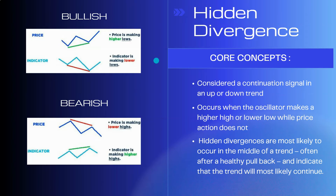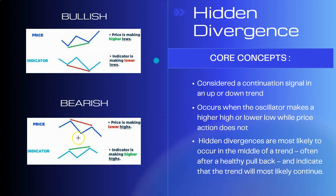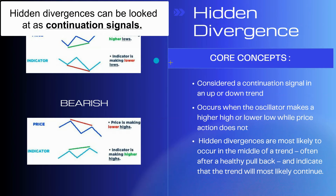On the bearish side of hidden divergence, the opposite occurs. This takes place during a downtrend where the indicator is making higher highs while price action is making lower highs. This tells us that the selling has not waned and the downtrend is going to continue — the reaction is most likely profit taking rather than the emergence of strong buyers, and it's most likely to be short-lived. You can expect the overall downtrend to resume.